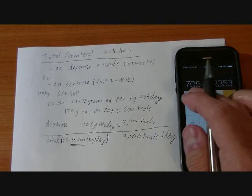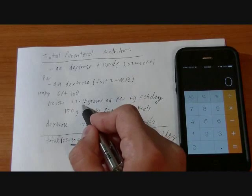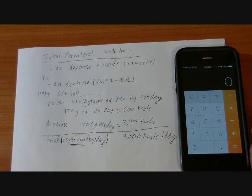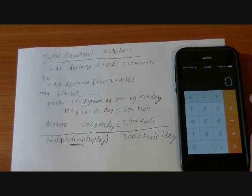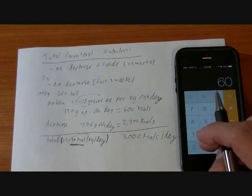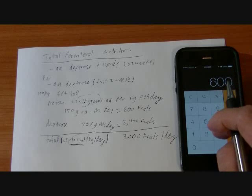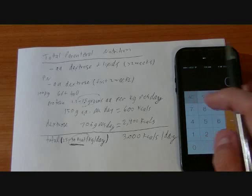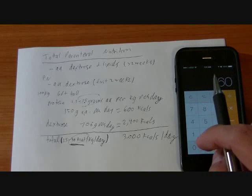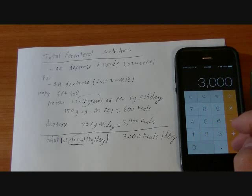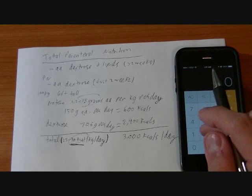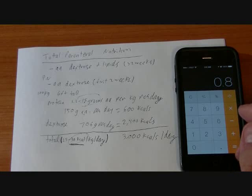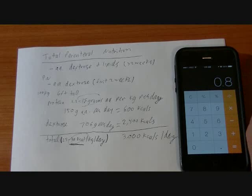Inevitably, once you calculate this out using the 1.5 grams and the 30 kcals, just with amino acids and dextrose, you're going to get that about 20% of your calories are going to be from the amino acids. And then your dextrose is going to be about 80%.